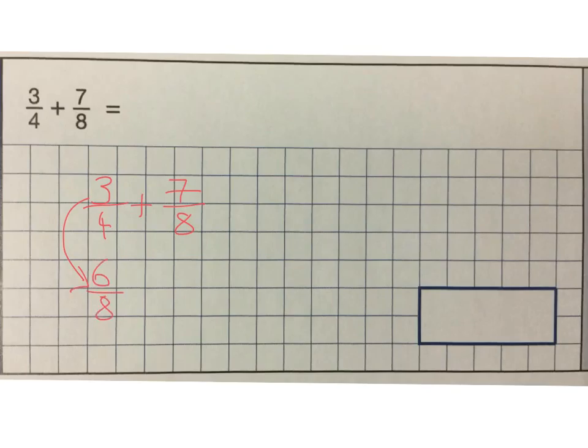And by using that equivalence, I can now perform my addition to work out that 6 add 7 is 13. So that gives me an answer of 13 eighths as an improper fraction.